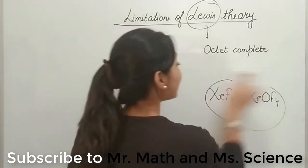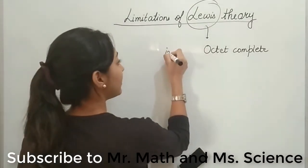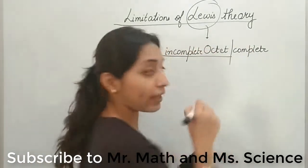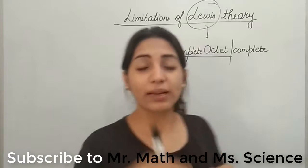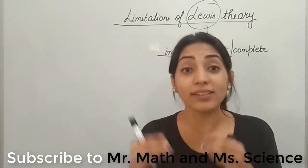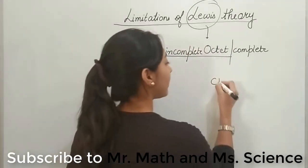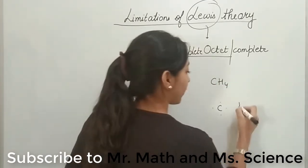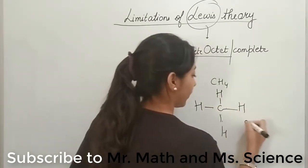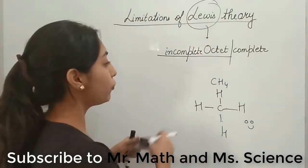Now let me say the second limitation. According to Lewis, it says that if there is incomplete octet, if the octet is not complete, the atom will combine with other atoms to form a molecule and it will keep on combining until and unless it attains a stable octet. That is why he said that earlier carbon had just four electrons. Now it combines with four hydrosions so that it has a total of eight electrons and hence the molecule becomes stable, right. But now I will give you two, three examples.